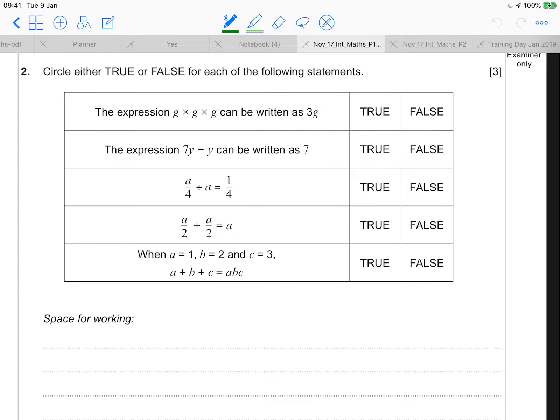So starting with question 1 from the table. The expression g times g times g can be written as 3g. Well this is false because g times g times g would be written as g to the power of 3. And g plus g plus g would be written as 3g. And they're not the same.